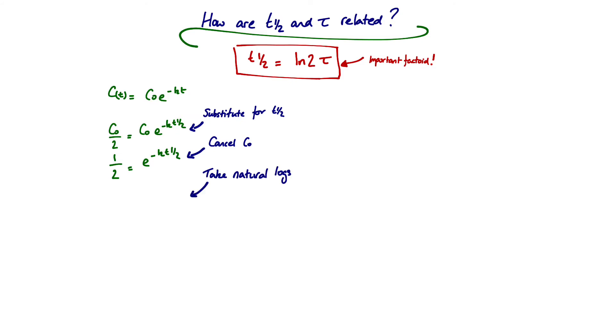We then take natural logarithms. We take the natural log of a half and the natural log of this exponential function, which takes out our exponent. Then recognize that using logarithms, ln of 1 over x is the same as minus ln of x. So apply that rule. We can then cancel minus signs from both sides to give us this equation, and then rearrange for half-life.